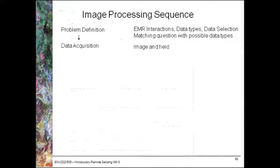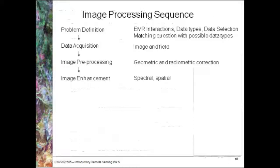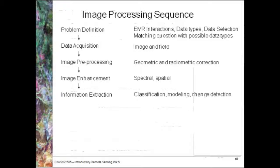We then go through to data acquisition, which includes acquiring both image and field data. The next step is image preprocessing, where we look at both geometric and radiometric corrections. From there, we go through to image enhancements — both spatial and spectral — really being able to increase the differentiation between different features based on spatial or spectral modes.